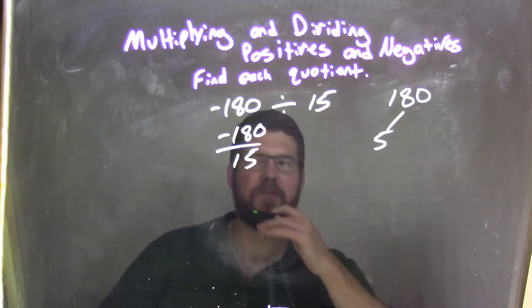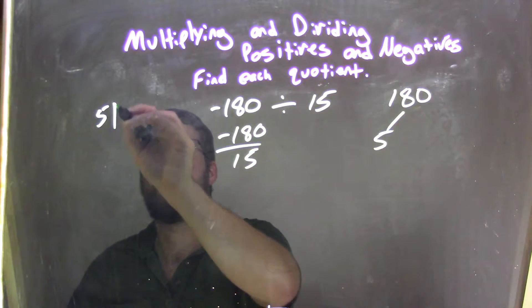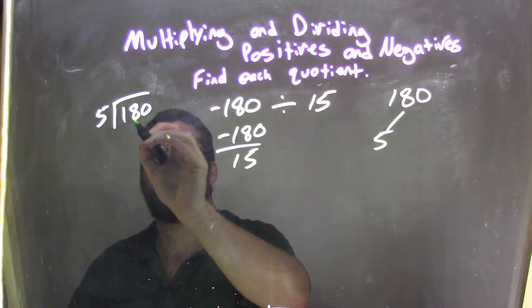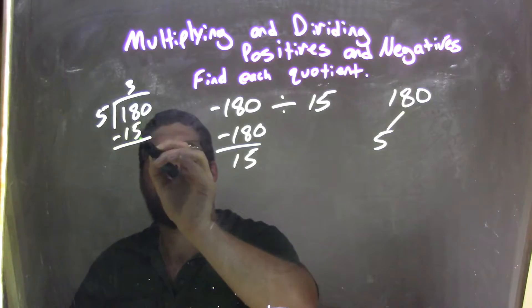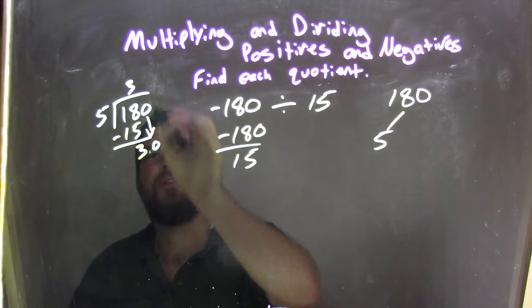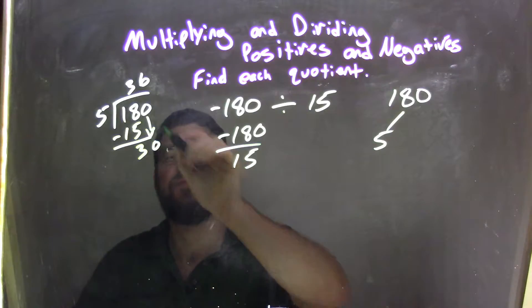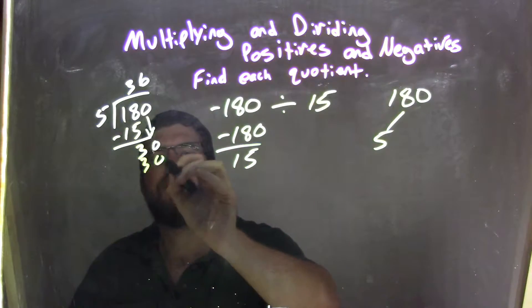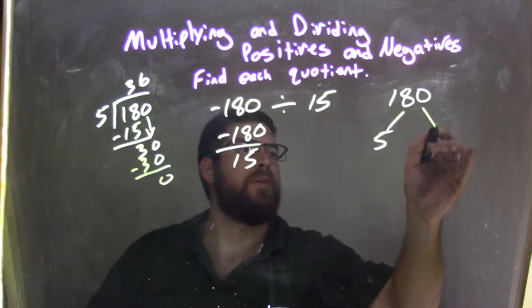Well, 5 into 180. How many times does 5 go into 180? 5 goes into 1 zero times, so 5 goes into 18 three times, being 15. Subtract that, we're left with a 3 here, bring down the 0. And 5 into 30 is 6. 6 times 5 is 30. 0. So we have 36 here.